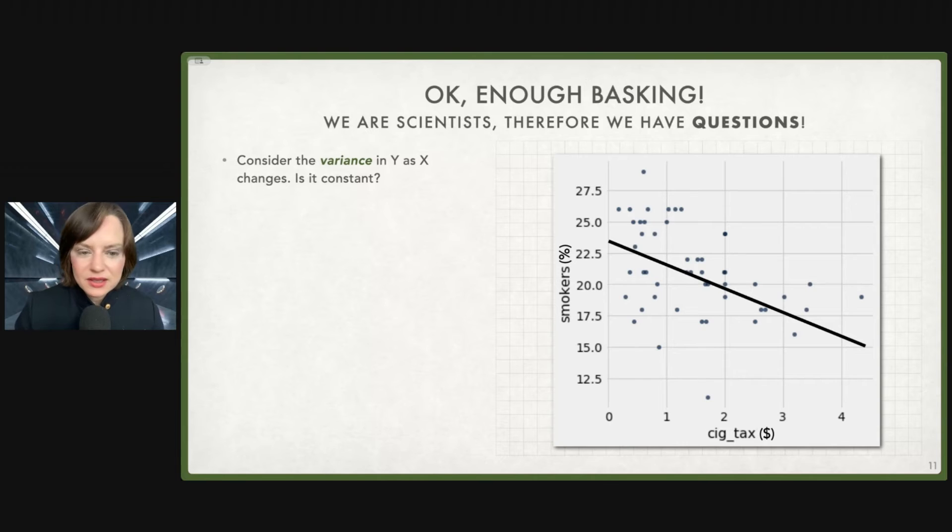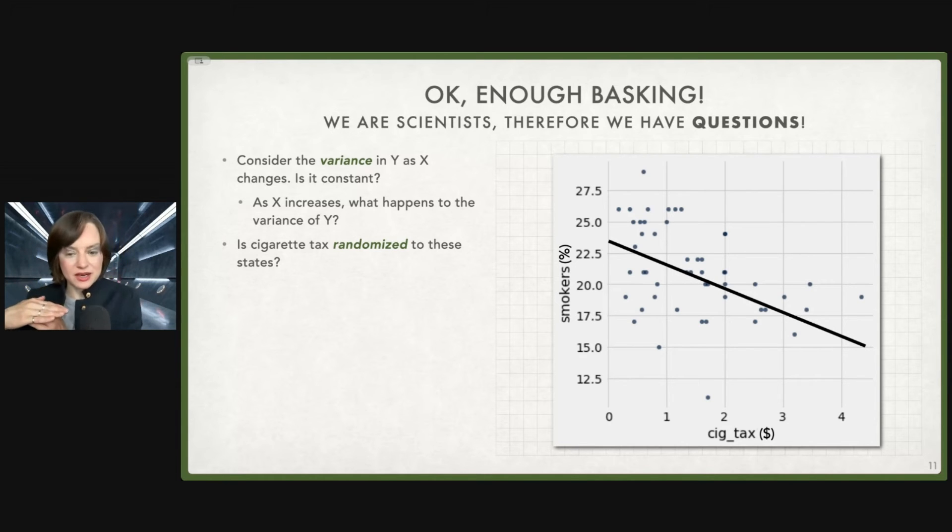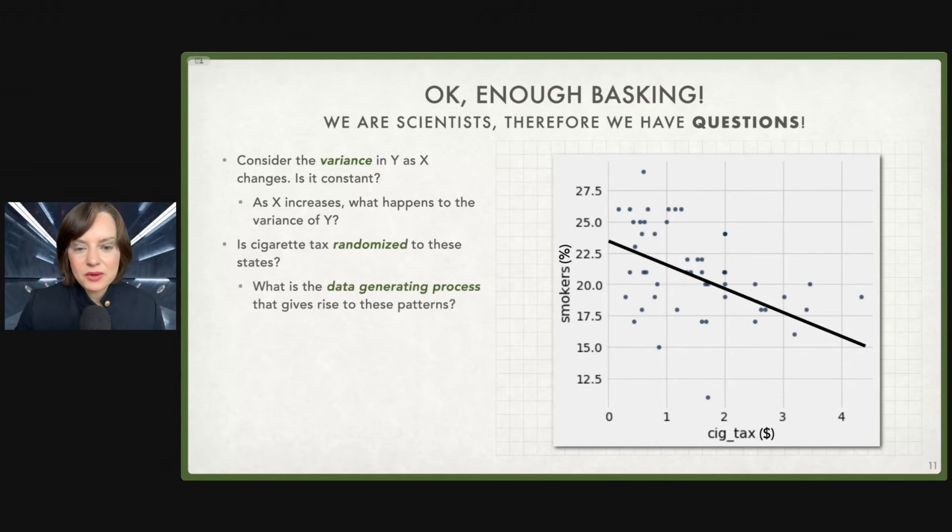So first, consider the variance in Y as X changes. Is it constant? What I mean by that is as X increases, what happens to the variance of Y? Well, it turns out the variance of Y shrinks as we increase X. So when X is very low, Y can take on a whole bunch of different values. And as we go across the X-axis, as we increase the cigarette tax, notice that the values for Y get closer around the best fit line. We also have questions like, is cigarette tax randomized to these states? Ideally, in order to really pin down causality, we want to do a randomized controlled trial. Unfortunately, or fortunately, we can't do that. But we can think about what might be going on that could be messing with our conclusions.